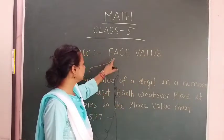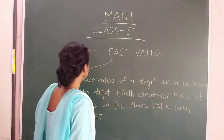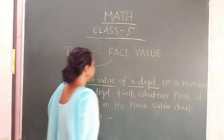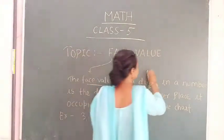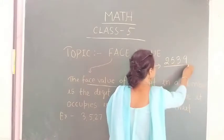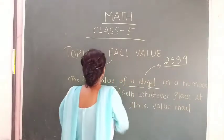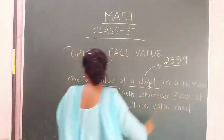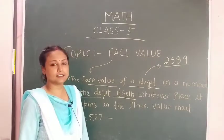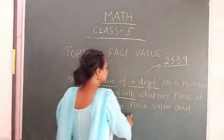First of all we want to know: what is the face value? The face value of a digit in a number is the digit itself. For example, suppose the number is 2, 5, 3, 9. The face value of a digit in a number is the digit itself, whatever place it occupies in the place value chart.